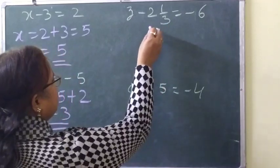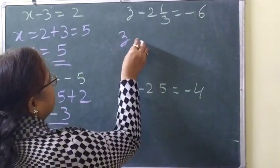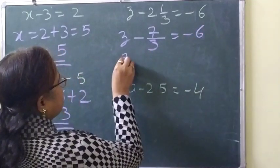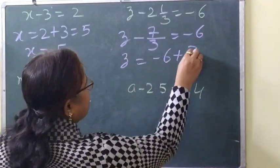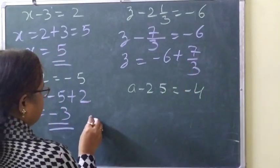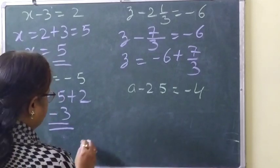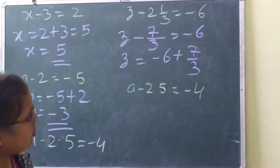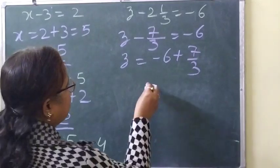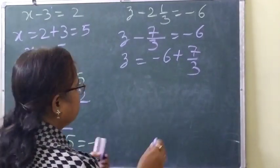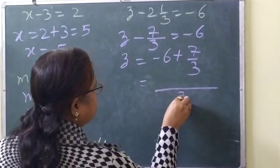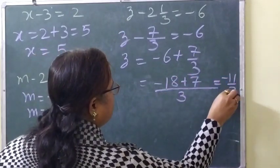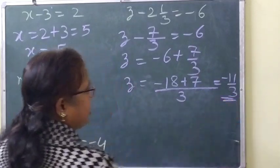For z minus 2 and 1 by 3 equals minus 6: converting, z minus 7 by 3 equals minus 6. So z equals minus 6 plus 7 by 3. Taking LCM of 3: that is minus 18 plus 7, giving minus 11 by 3. So the value of z is minus 11 by 3.